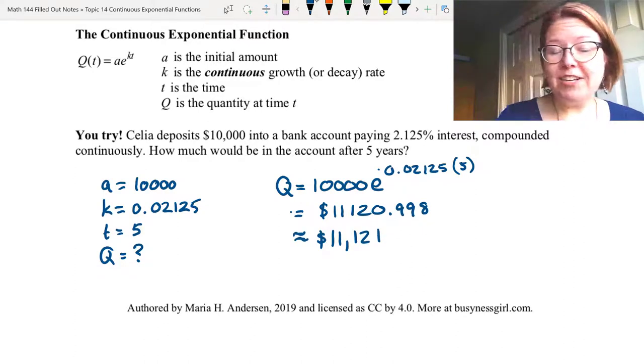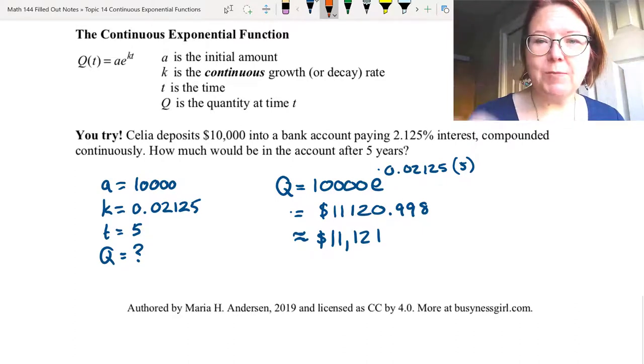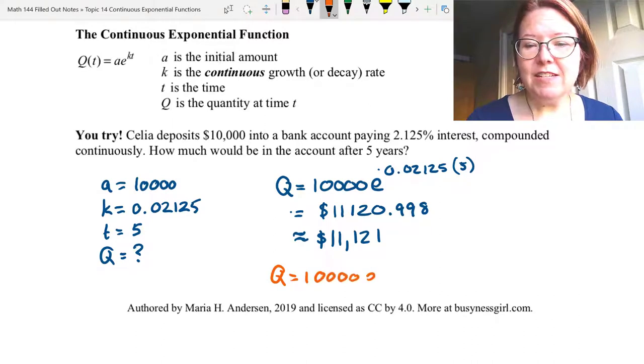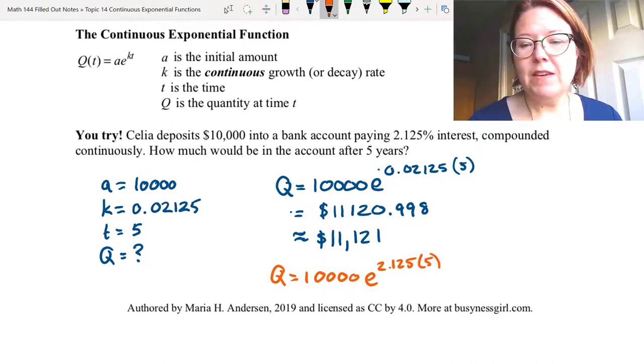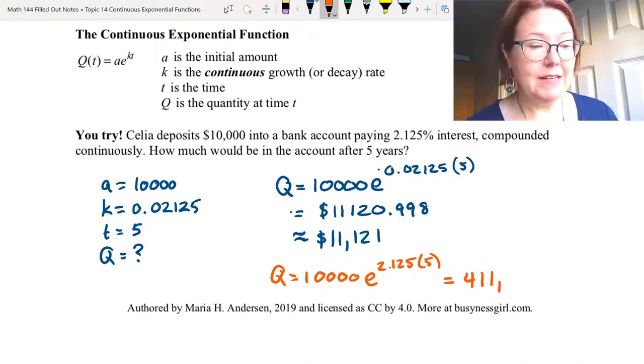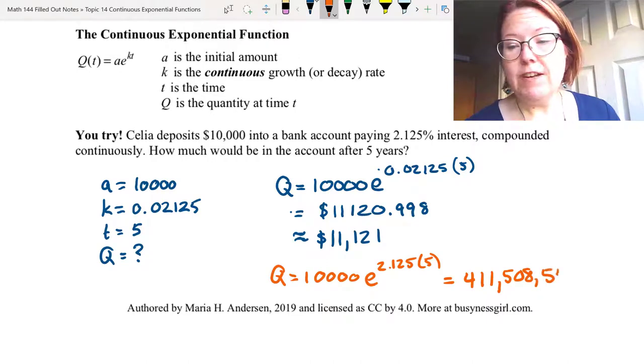Now, if you forget to convert that k value of 2.125% to a decimal, I want to show you what the result is. I'm going to put this in red so you don't think this is the answer. It would be 10,000 times e to the 2.125 times five, and that comes out to be 411,508,557.